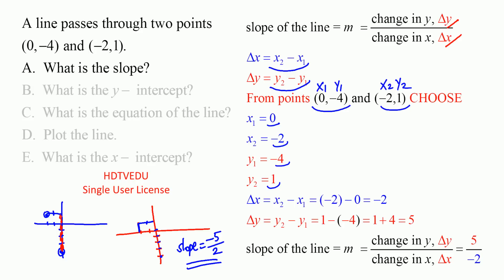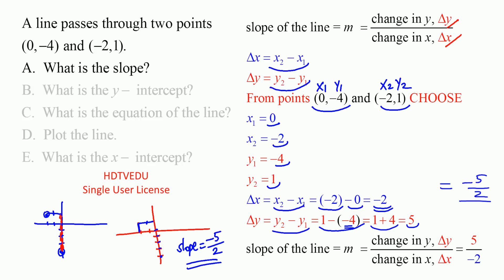Substitute x1, x2, y1, y2 into Δx and Δy. Δx equals x2 minus x1: x2 is -2, so -2 minus 0, which equals -2. Δy is y2 minus y1: y2 is 1, y1 is -4, so 1 minus (-4). Negative of negative is positive, so that makes it 1 plus 4, which equals 5. So our slope is Δy over Δx: 5 over -2, which is the same as -5 over 2.